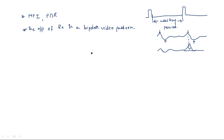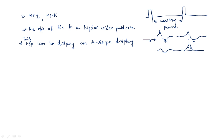This type of waveform can be displayed on an A-scope display without any problems. An A-scope display is like a CRO which can display both positive and negative peaks. Observing these waveforms, they have both positive and negative components — that means it is a bipolar video pattern. That signal is used to display information related to targets, whether stationary or moving.